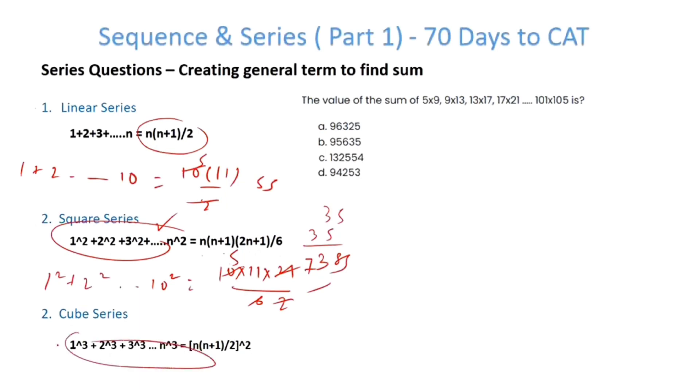If you take a very simple example, 1³ + 2³ + 3³ + ... + 10³, you know that n(n+1)/2 is going to be 55. So this becomes 55².